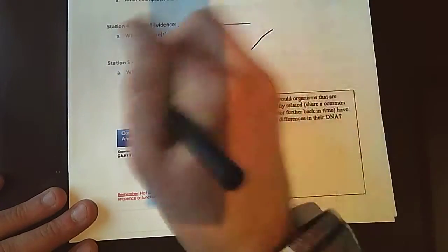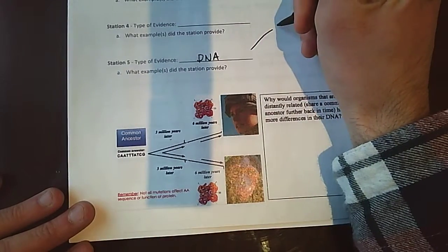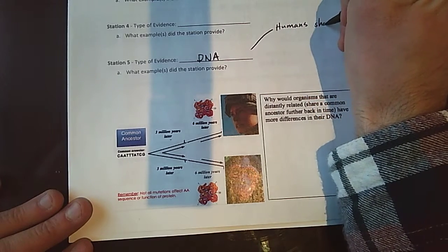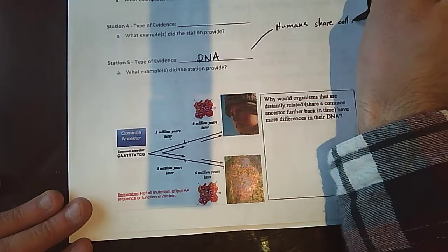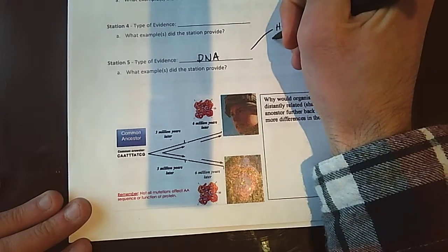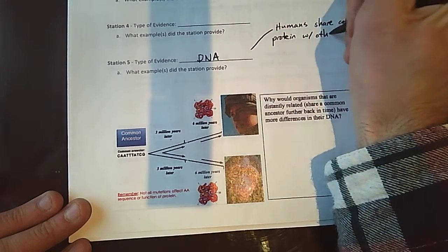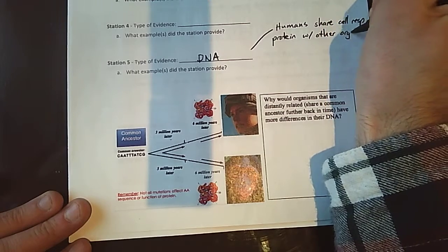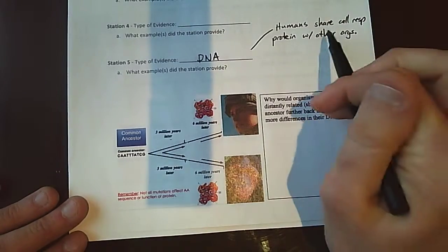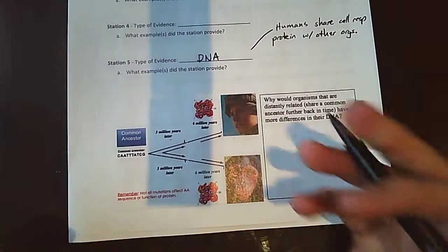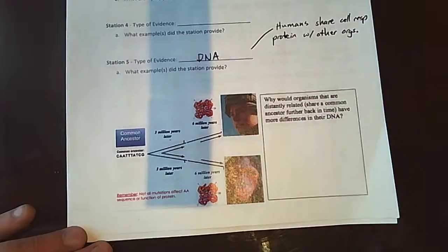So the fifth station you guys did had to do with DNA evidence. And we found out from that station that humans share a cellular respiration protein with other organisms. So it's kind of like a homologous structure, right? If they share the same protein, we can make the conclusion that at one point they shared a common ancestor that also had that protein.